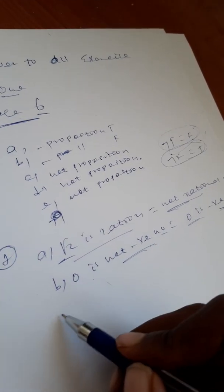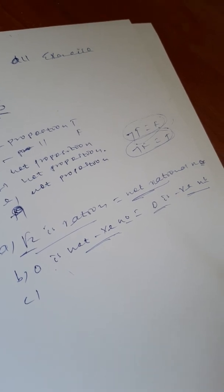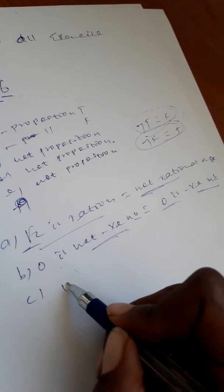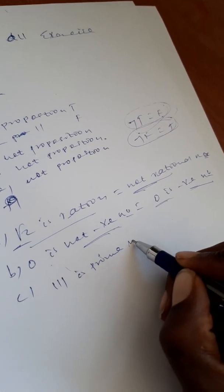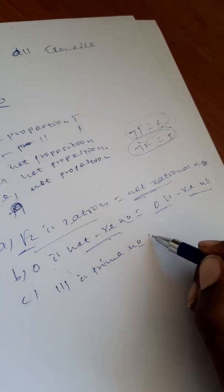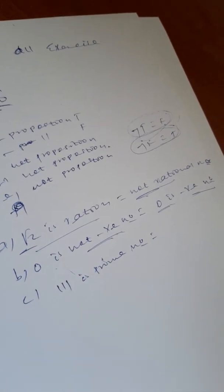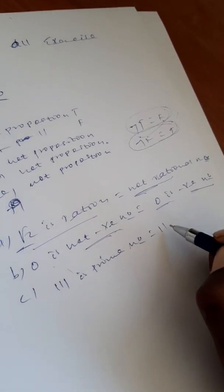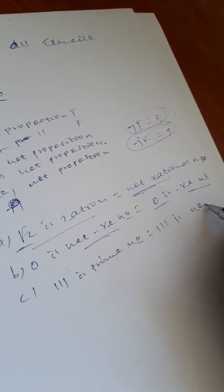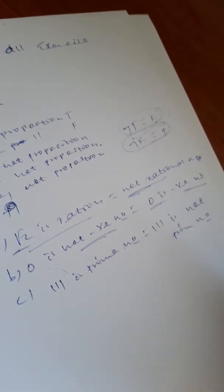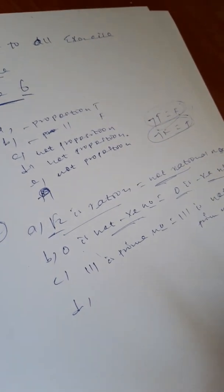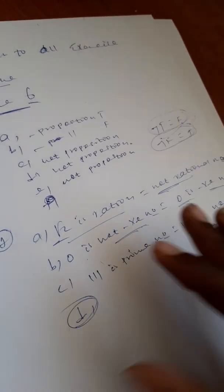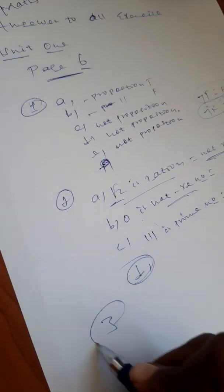Statement: 111 is a prime number. The negation is: 111 is not a prime number. That is the negation for question number two. Now we pass to solve the next question.